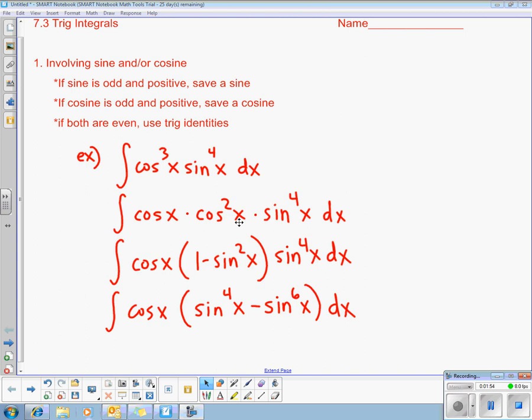The other two cosines I need to convert into sines. The trig identity sine squared plus cosine squared equals one can be used to change even multiples of cosine into sines by replacing cosine squared with one minus sine squared. And then if I distribute the sine to the fourth to both of those terms I get sine to the fourth minus sine to the sixth and this cosine was saved all along.